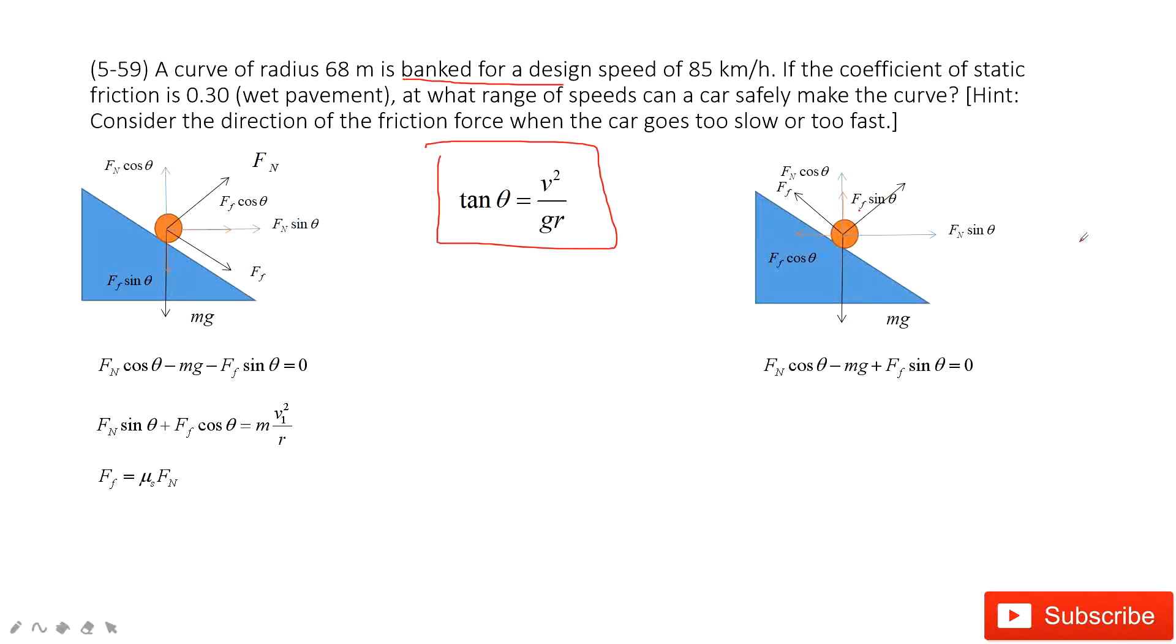Then we look at the x component. The central force is fn sine theta minus the friction times cosine theta equals the mass times the central acceleration. This central acceleration depends on v2 squared divided by r. And then this friction is still the mu s times the normal force.